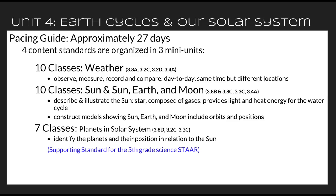The second part of this 10-day mini-unit is constructing models showing the sun, earth, and moon — creating different models on paper and in 3D. It needs to include orbits and also the positions of those three. If 10 days seems like a large amount of time, you could break this up into two 5-day mini-units, but with the content being so closely related, I put them together as a 10-day mini-unit. You can edit that as you would like.